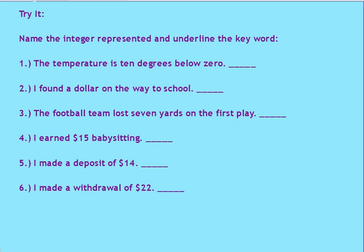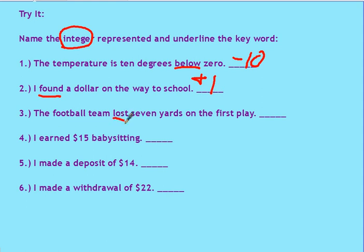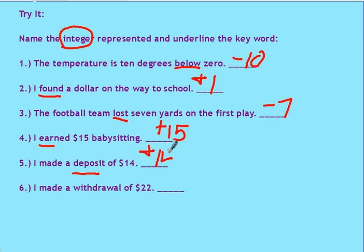So let's give it a try. Write the integer — the positive or negative number — represented, and underline the keyword. The temperature is 10 degrees below zero, so negative 10. I found a dollar on the way to school — found is a positive, so positive 1. The football team lost 7 yards on the first play — negative 7. I earned $15 babysitting — that's positive 15. I made a deposit of $14, so your bank account will go up — positive 14. I made a withdrawal of 22, so your bank account's going down — negative 22.